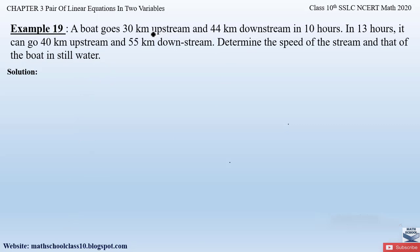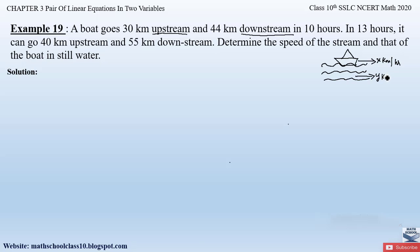Let us also see what upstream and downstream mean. When a boat is moving on a stream and the water is flowing in one direction and the boat is also moving in the same direction, we say it is downstream. If the speed of the boat is x kilometers per hour and the speed of the water is y kilometers per hour, the total speed will be x plus y kilometers per hour in downstream.